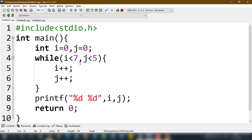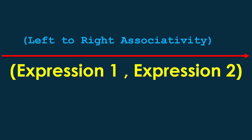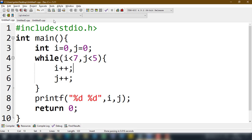In the case of the comma operator, if expression one comma expression two is there, we all know that the comma operator has left-to-right associativity. What happens is that first expression one is evaluated, and after that expression two is evaluated.